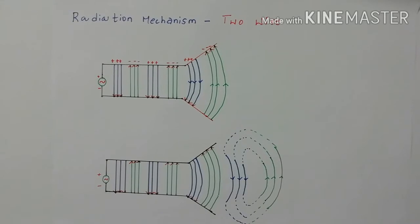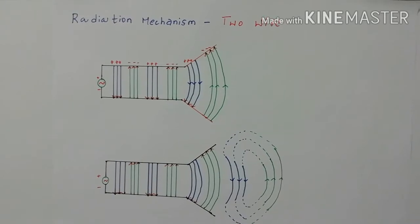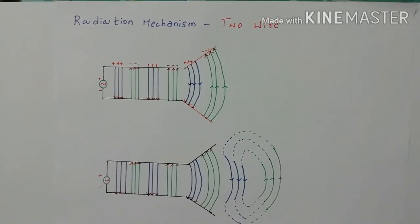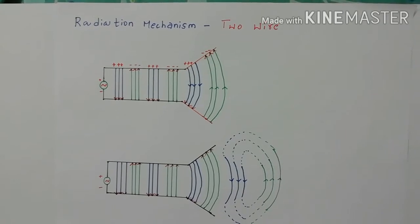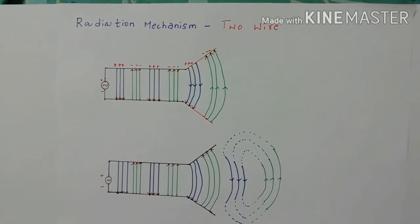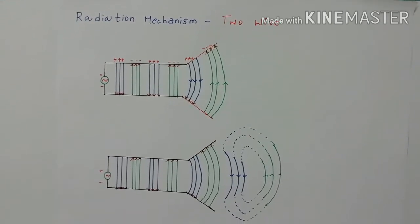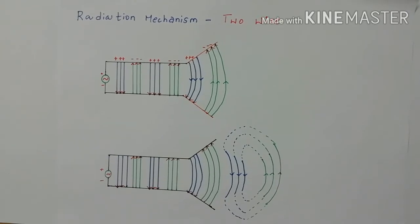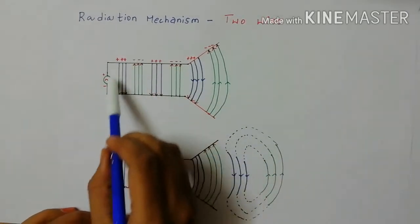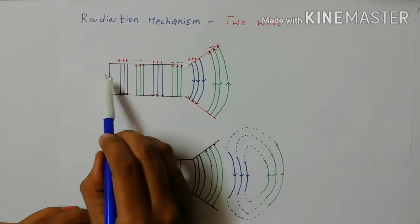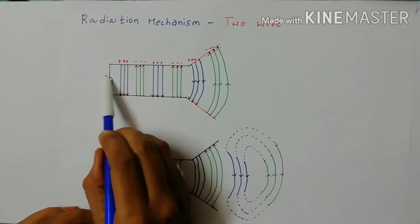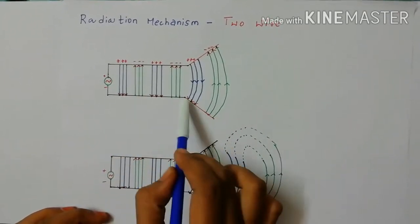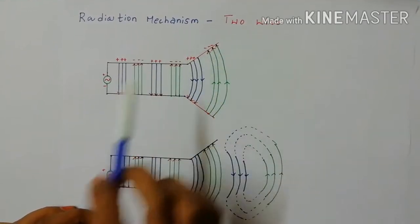Hello viewers, in today's class we are going to discuss the radiation mechanism for a two-wire antenna. In my previous class I explained radiation mechanism in a single wire — this is a continuation of that. In this diagram we have an AC source followed by a pair of transmission lines and here we have the antenna structure.